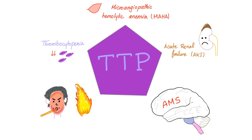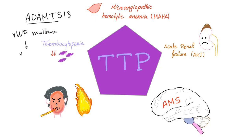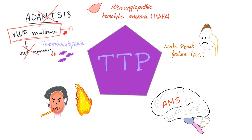How about TTP? The problem here is in ADAMTS-13. What's ADAMTS-13? It's a molecule that normally should divide your large, harmful von Willebrand factor multimers and convert them into benign, functional von Willebrand factor monomers. But when you lack ADAMTS-13, you will be stuck with the von Willebrand factor multimers, because now you cannot convert them into monomers. And when you are stuck with multimers, they will lead to thrombosis.